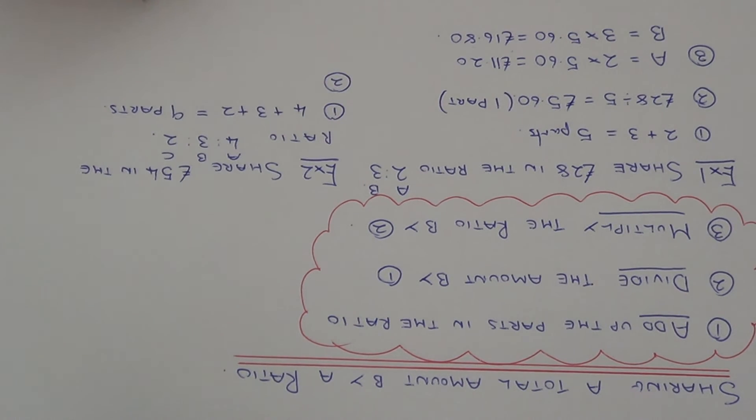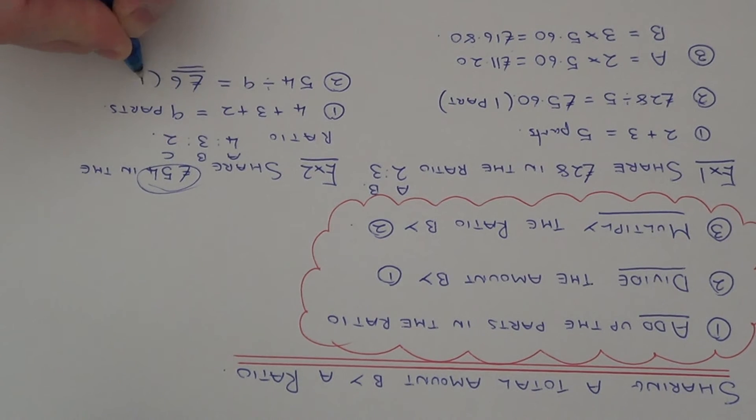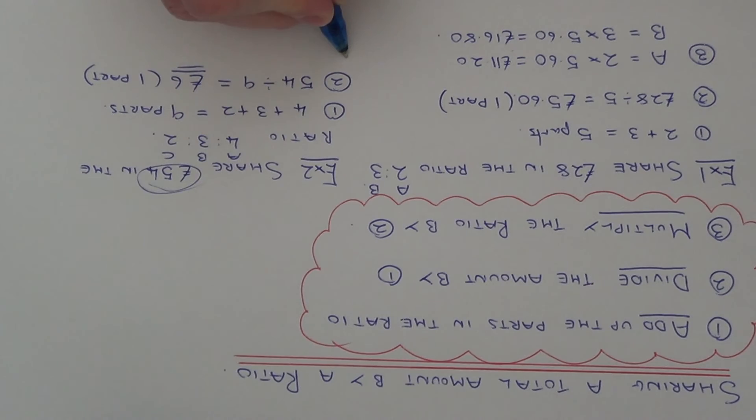So the second step we need to find out the value of one part. So we divide the amount of money by our answer from step one. So we do 54 divided by nine. So that gives us £6.00. So that's our value for one part. And then the third step is to work out how much each person receives.